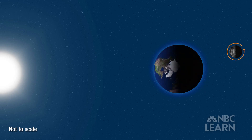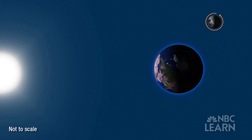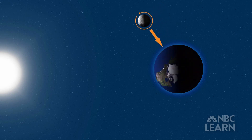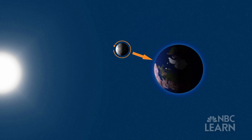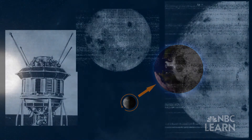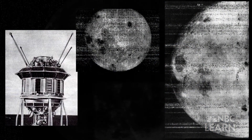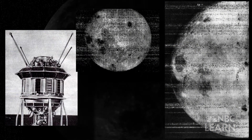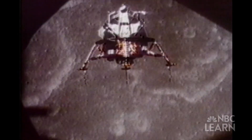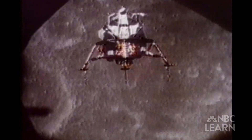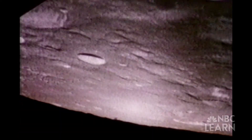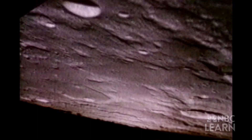That's because as the Moon revolves around Earth, it also rotates on its axis. The Moon revolves and rotates once each month, which keeps the same side of the Moon always facing Earth. The first images of the far side were taken in 1959 by a Russian probe called Luna 3. American astronauts got a glimpse of the far side of the Moon as they orbited it during the Apollo missions of the 1960s and 1970s.